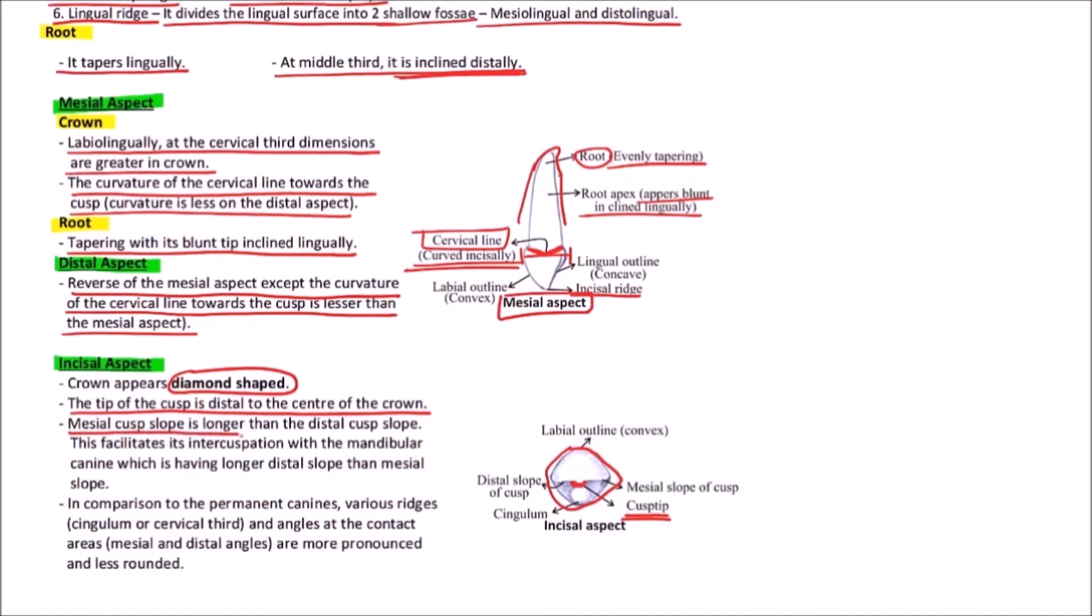The mesial cusp slope is longer than the distal cusp slope. This is the distal cusp slope, and this is the mesial cusp slope, which is longer.